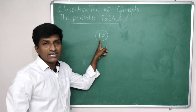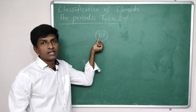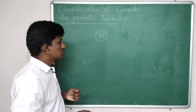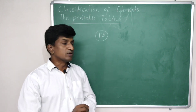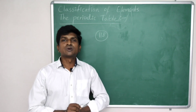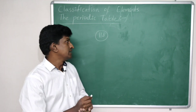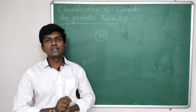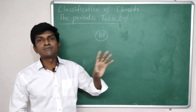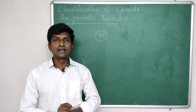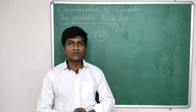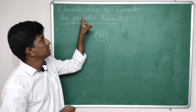Up to now, more than 118 elements have been discovered. Most of the elements are metals. To remember the properties of all these elements individually is very difficult. So, we need to classify all these elements systematically so that identifying their properties becomes easy.